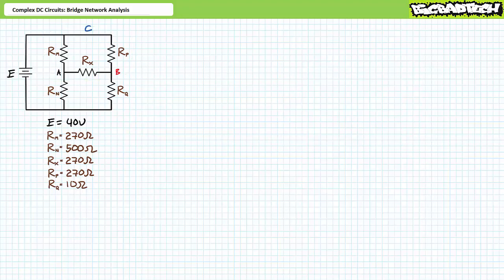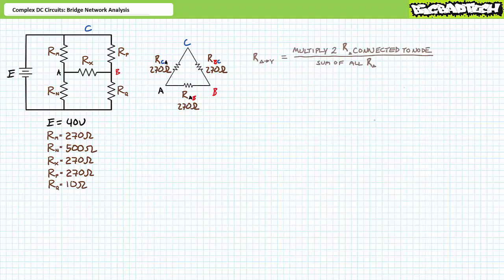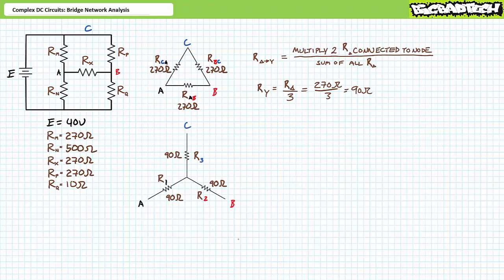Adding a third node C to the top of our delta configuration and zooming in, delta element RAB is RX between nodes A and B, delta element RBC is RP between nodes B and C, and delta element RCA is RM between nodes C and A. The general delta-to-Y conversion multiplies the two delta resistors connected to the node of interest and divides by the sum of all delta resistances. Given this is a balanced delta, each balanced Y resistor is one-third the magnitude of the delta resistors: RY = R-delta / 3. Substituting our values, Y resistors R1, R2, and R3 are each 90 ohms.